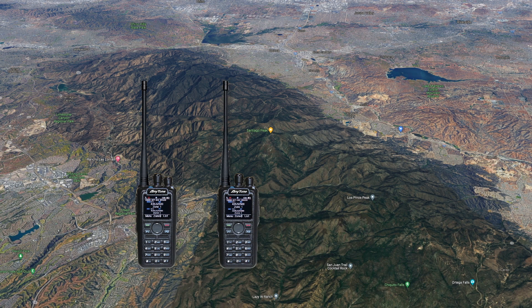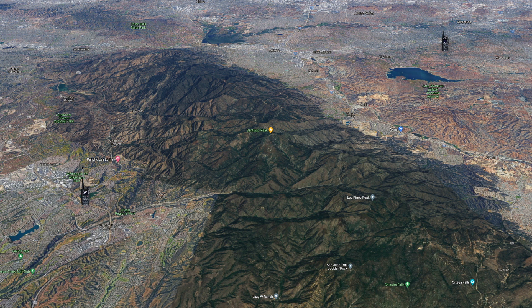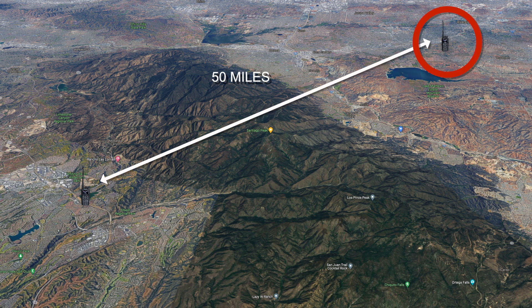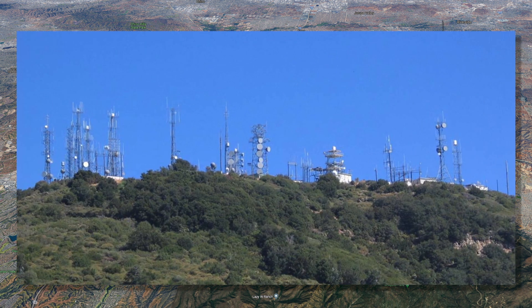Now let's look at repeaters. At the end of the day, Bob and Dave drive to their respective homes about 50 miles apart. They'd like to talk on the radio from home, but the distance is great and a large mountain is in the way. We'll use this map in Southern California for our example. Bob lives in Orange County on the left, and Dave lives in Riverside County on the right. Because of both the distance and the mountain in the way, there is no chance that the two radios can reach each other in simplex mode.